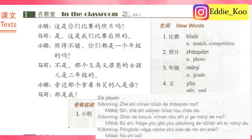照得不错 — not bad. 不错 alone means not bad. 照 again means take a photo. 得 is a very important grammar point — it is an indicator for a coming adverb or adverbial description. So the literal meaning is 'took the picture not bad,' because 不错 works as an adverb and 照 is the verb. That's why we say 照得不错.